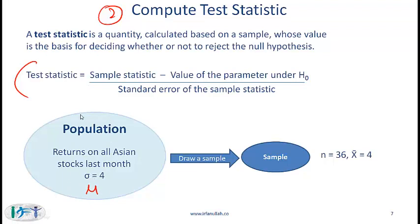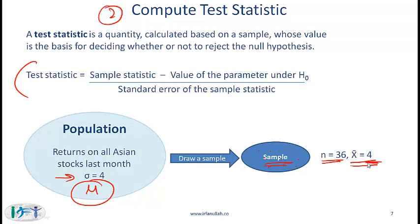Going back to our scenario: our population consists of the returns on all Asian stocks last month. We know the population variance and standard deviation. Our hypothesis is related to the population mean. We draw a sample of size 36, and the sample mean is 4%. The test statistic is calculated as the sample statistic minus the value of the parameter under H0. Let's recall what that means — the null hypothesis was mu ≤ 2.